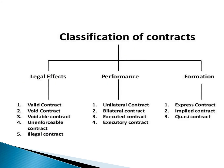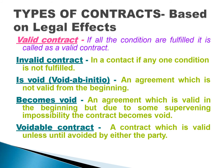Next is the classification of contracts. There are three basic classifications: according to legal effects, according to performance, and according to formation. Based on legal effects: first is a valid contract — one in which all essential conditions are fulfilled. Next is an invalid contract — if any one of the essential conditions is not fulfilled, the contract becomes invalid.